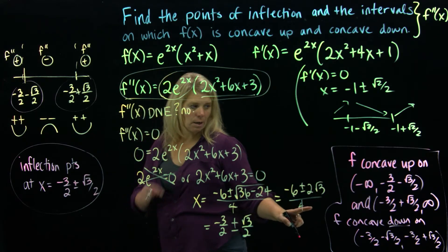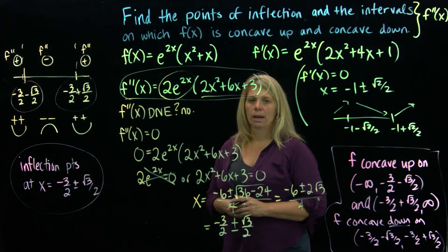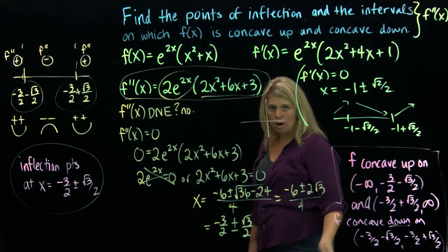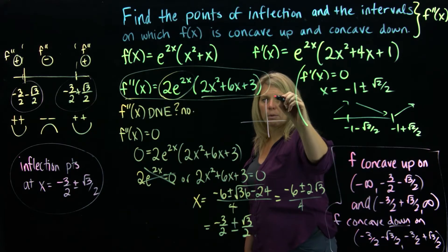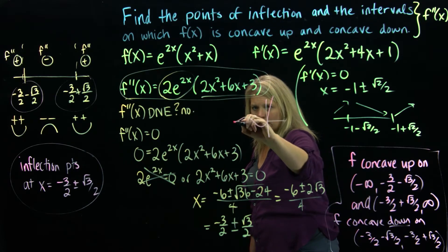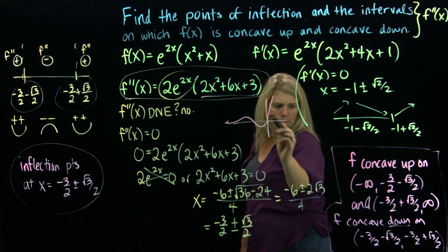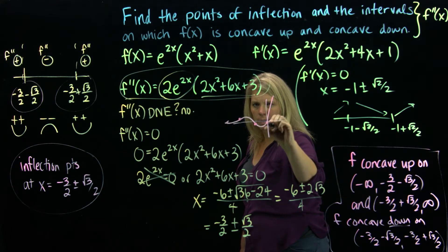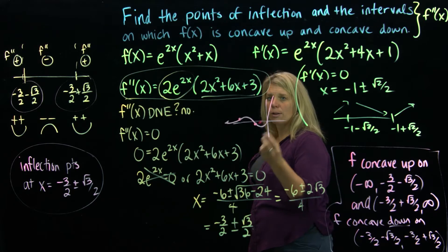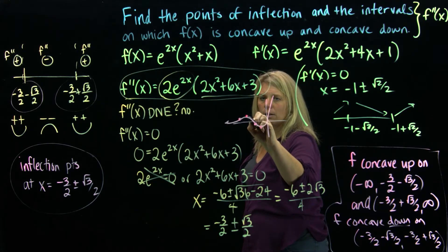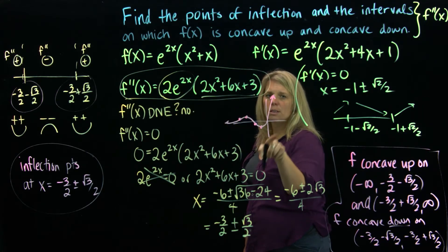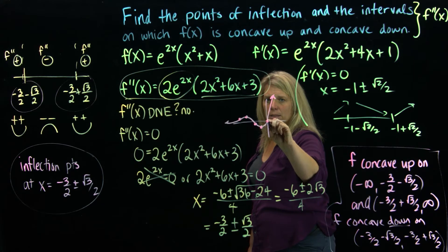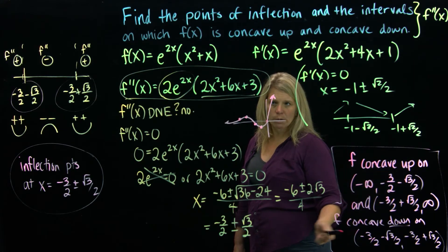So we have two inflection points and two changes in concavity. Looking at the graph on the graphing calculator, it's difficult to see these changes in concavity. The sketch shows the graph concave up until the first x coordinate, then concave down until the next, then concave up again. We already know about a local minimum and local maximum from increasing/decreasing work, and end behavior from limits. You might use your calculator to get decimal approximations of these coordinates.